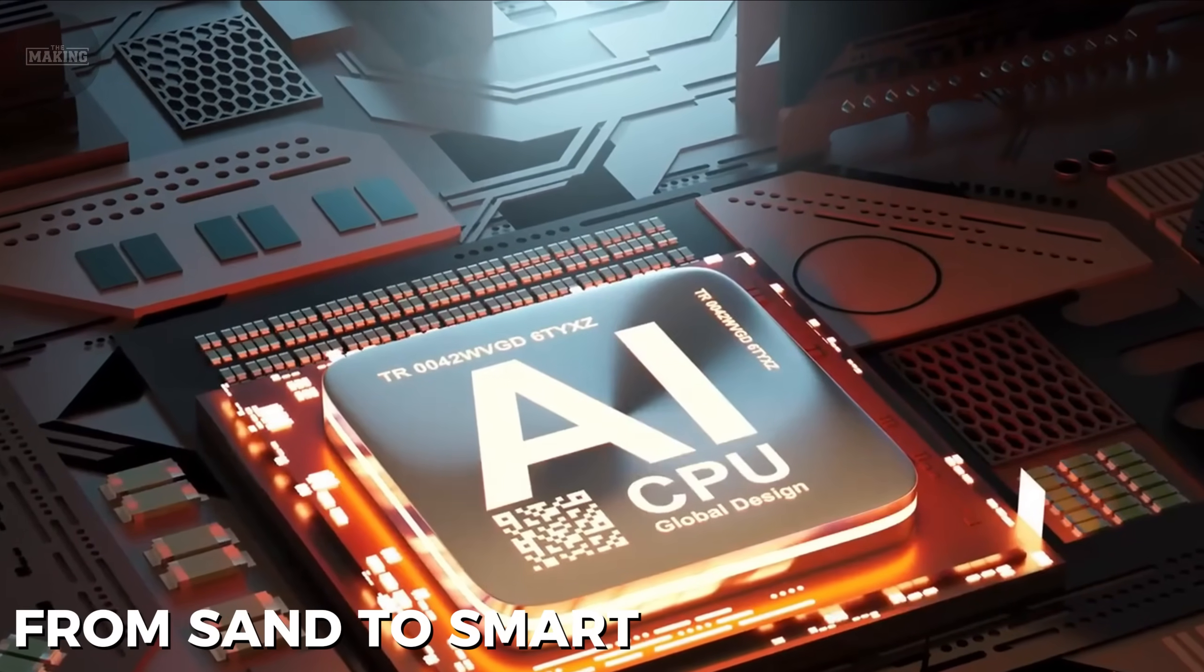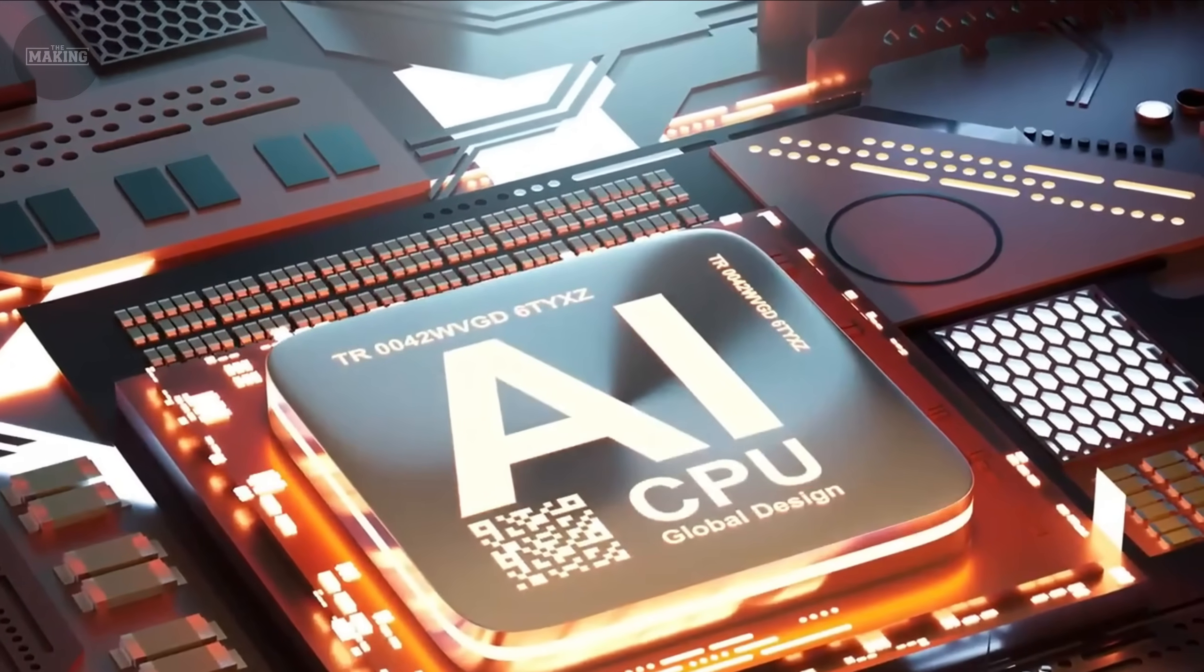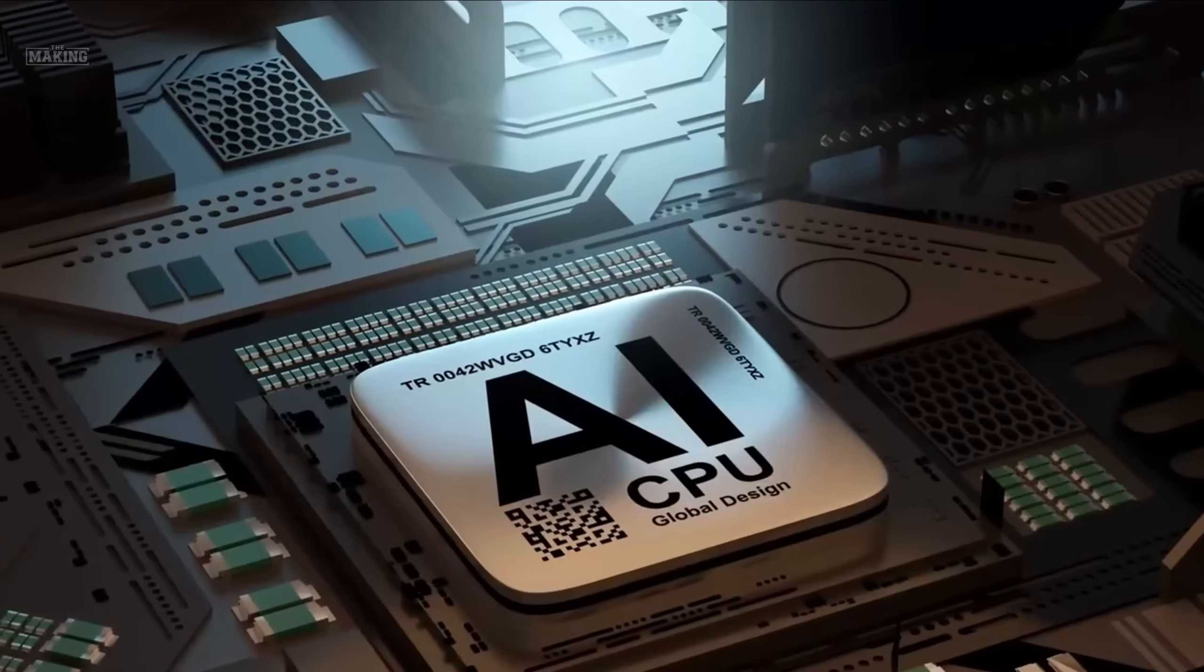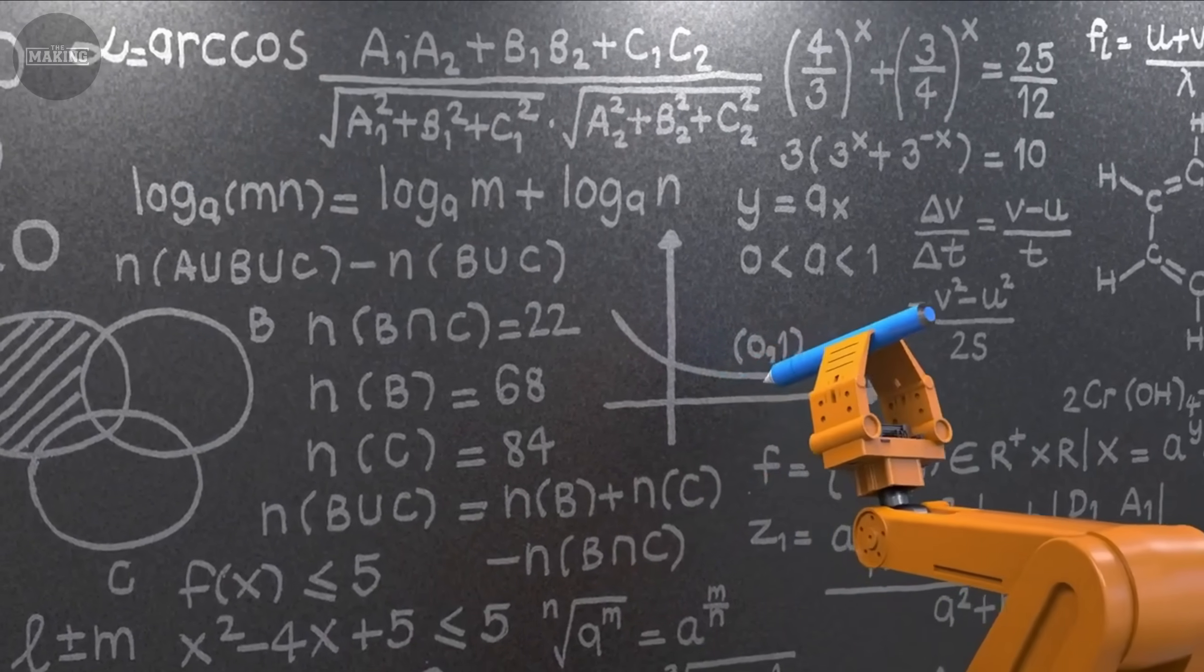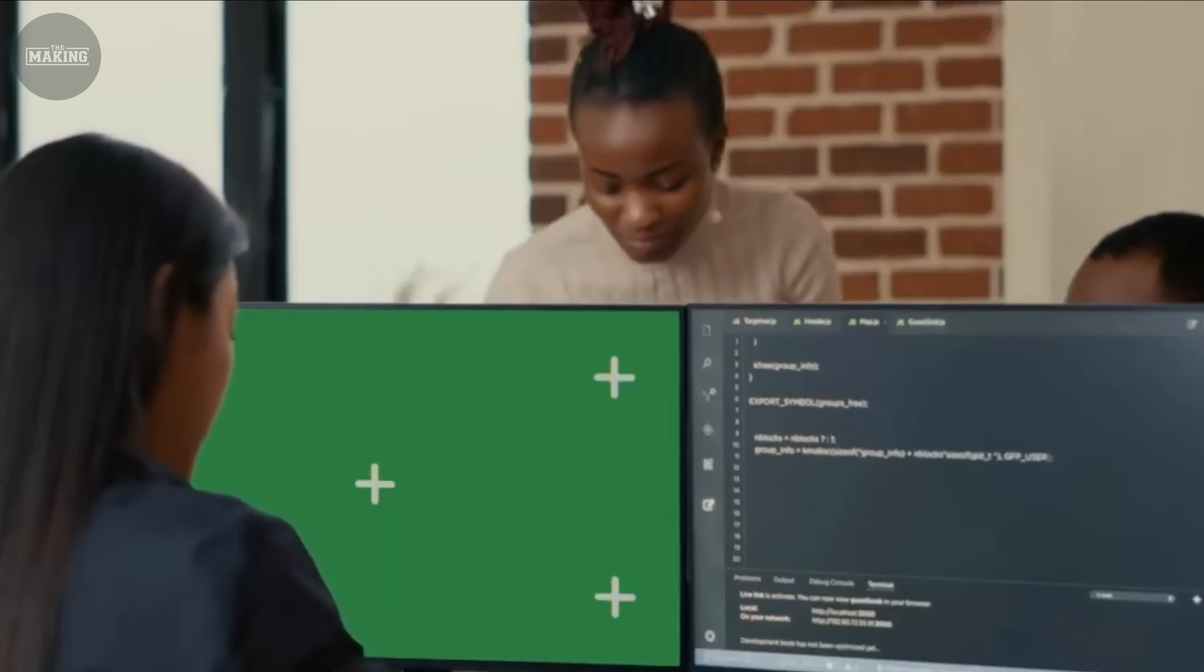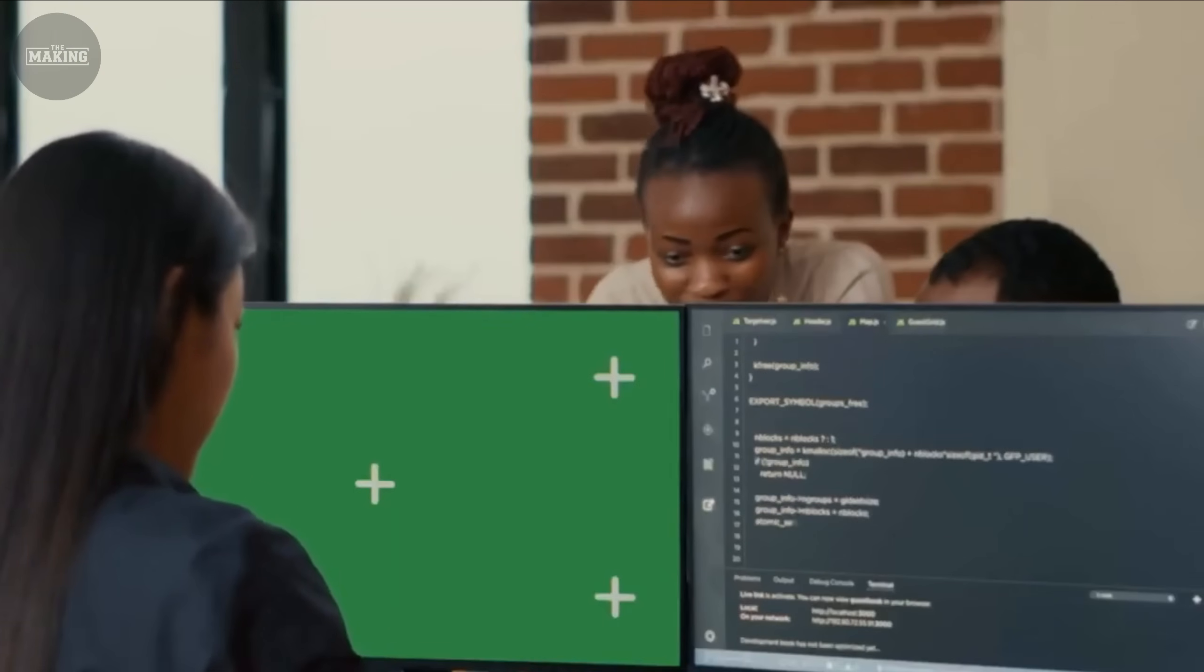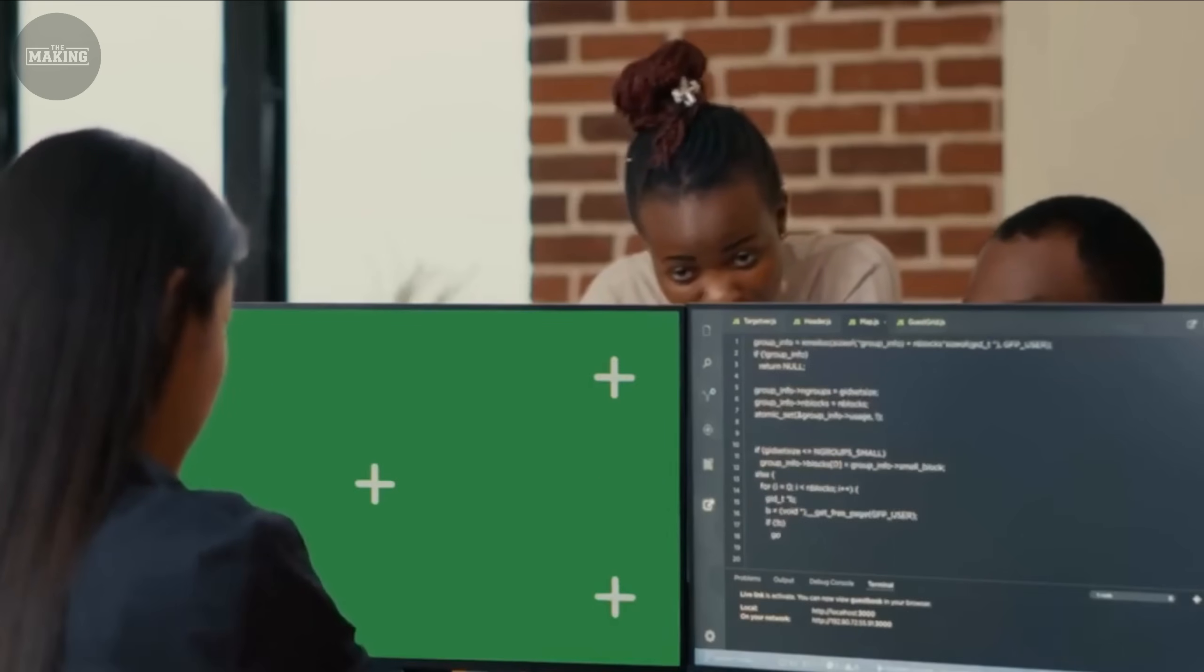The result is a silicon masterpiece containing 50 billion transistors that can perform one quintillion calculations per second. From sand to artificial intelligence takes four months and involves 10,000 people across multiple continents. That chip now powers everything from your smartphone's camera to medical diagnosis systems, making the impossible routine.